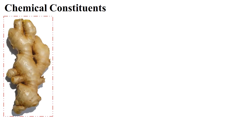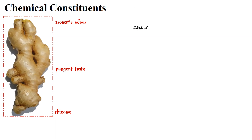Chemical constituents. To recall three points: ginger is aromatic in odor, ginger has pungent taste, and ginger is a rhizome. The aromatic odor is due to the presence of volatile oil. The pungent taste is due to resinous substances. One of the functions of rhizome is to store food — in the case of ginger, the stored food is starch. Ginger has about 50% starch.